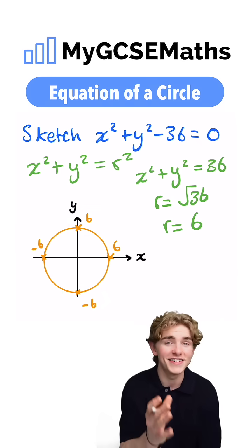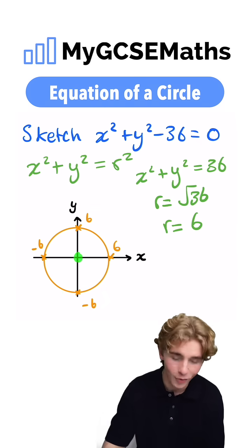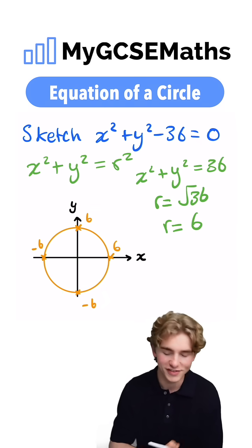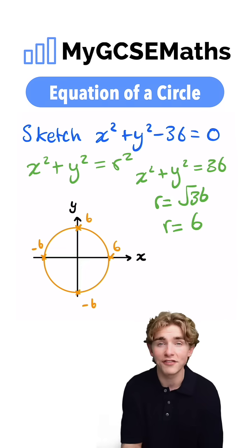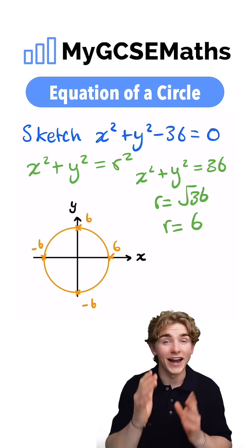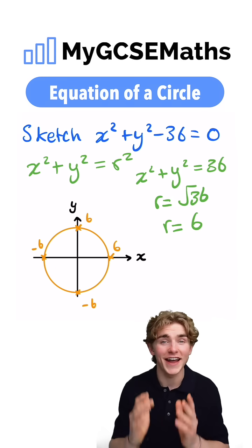Why is that? That's because the center of our circle is 0, 0, and the radius is equal to 6, which means this, this, this and this all have to be equal to 6. And that is how we sketch our circle.